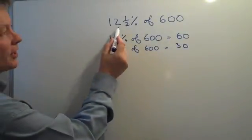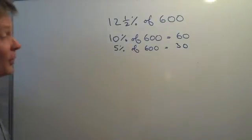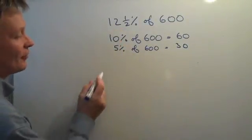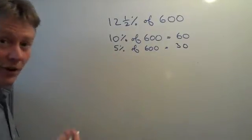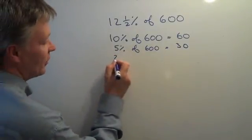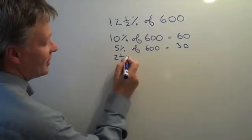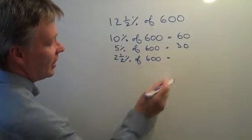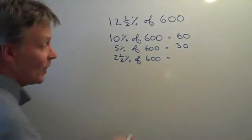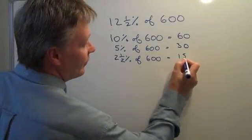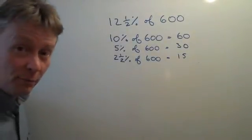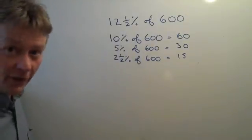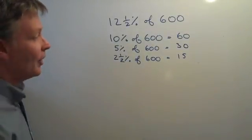However, we want to calculate 2.5%, or at least we want to end up with 12.5%. So if we divide that 5 by 2, in other words 2.5% of 600, that will give us half of the 30, which is 15. So what we've got now is the building blocks to calculate various percentages of the number.